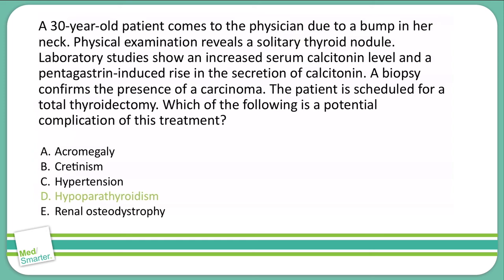What are the hypocalcemia symptoms? Tingling in the lips, tingling in the fingers, muscle spasms. They can have a positive Chvostek sign — if we tap on the facial nerve in the cheek, that will cause contraction of the facial muscles. They can also have a positive Trousseau sign, which is when you occlude the brachial artery in the upper arm, causing a carpal spasm in the distal portion of the arm. Now, renal osteodystrophy can give signs and symptoms similar to hypoparathyroidism; however, it's a completely different mechanism — it's not due to the actual removal of the thyroid.